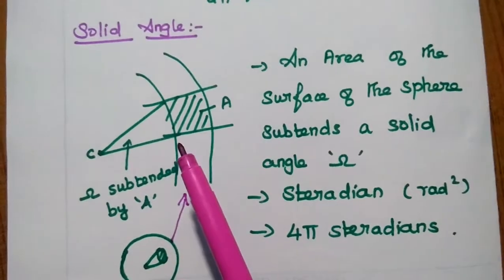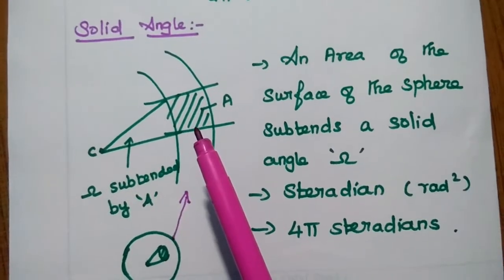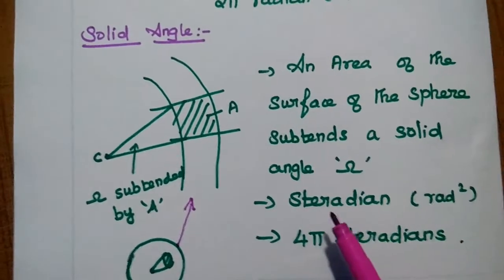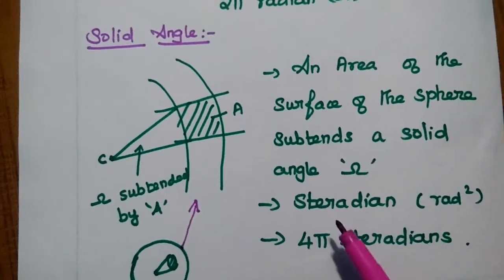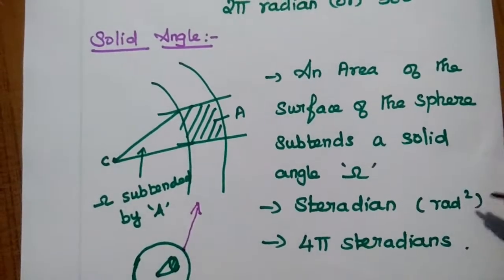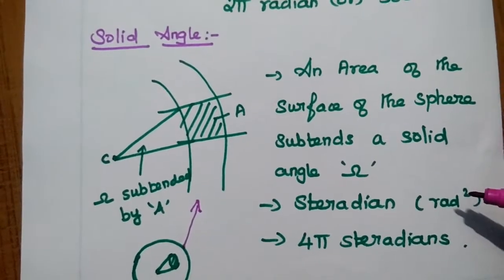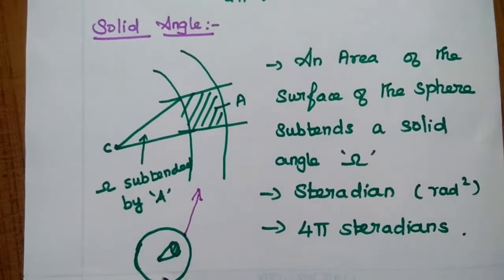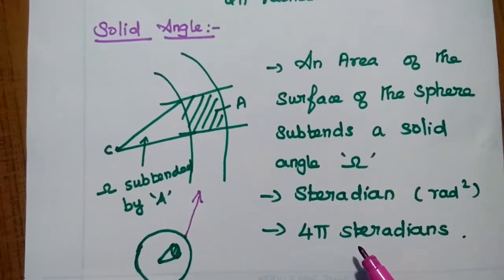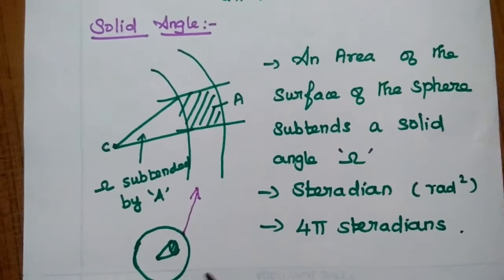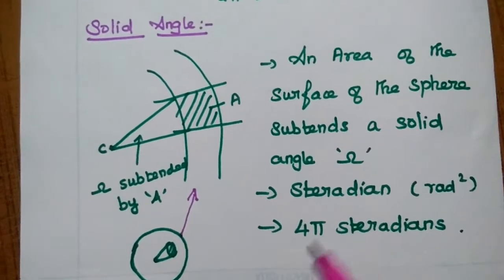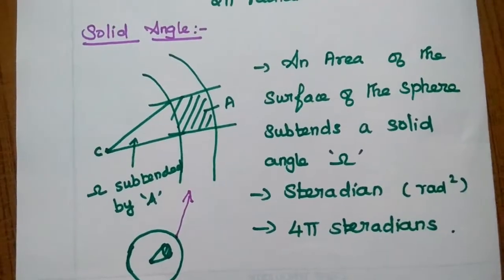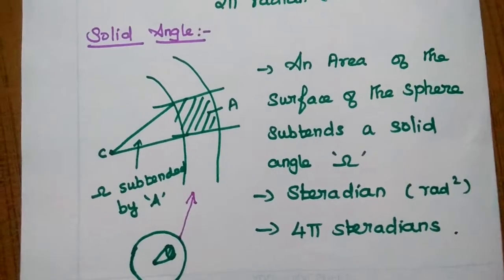In case of antenna, we are going to use only solid angle. It is represented by the omega symbol. Its unit is steridian. The steridian is nothing but the square of radian — the square of the plane angle is nothing but steridian. For the sphere, the total angle is 4π steridians. So in antenna, we have to consider the solid angle to analyze the characteristics of an antenna.